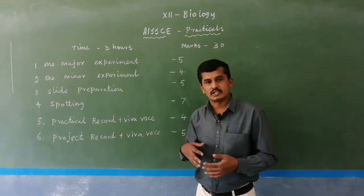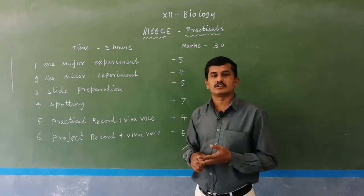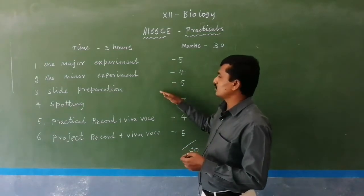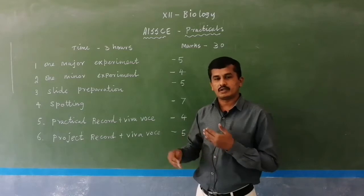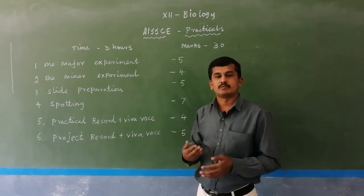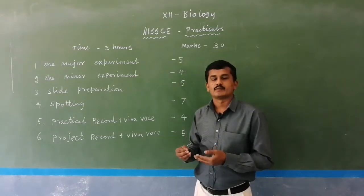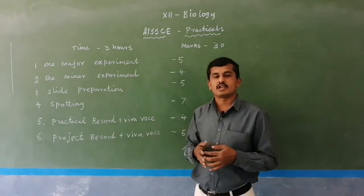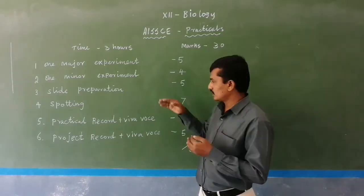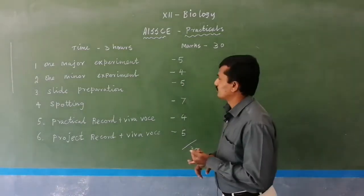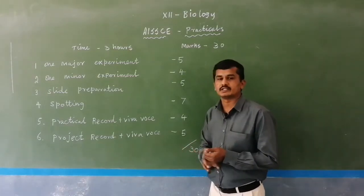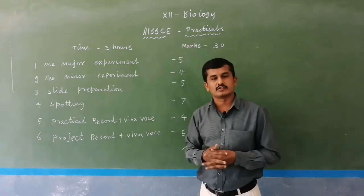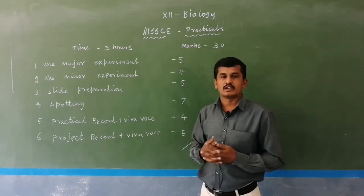Slide preparation is for five marks, major experiment for five marks, minor experiment for four marks. Spotting means any one microscope slide — microscopic permanent slides or maybe specimens — are kept in our laboratory area to observe. You observe the slide and write down in your exam paper according to what you see. Spotting may be in the form of slides, drawings, pictures, or slides under microscopes. For the spotting experiment, you have seven marks.